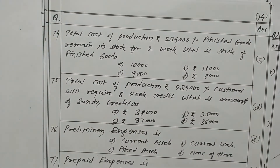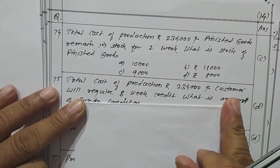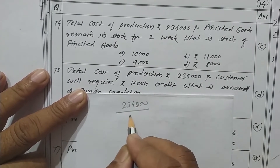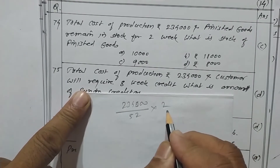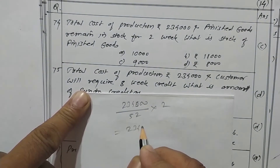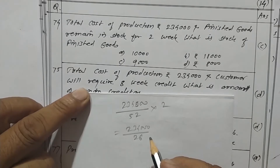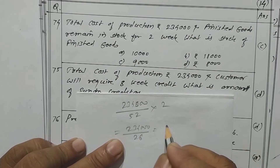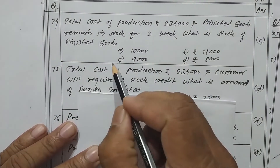Total cost of production is rupees 2,34,000. Finished stock remains in stock for 2 weeks. So 2,34,000 divided by 52 into 2 weeks gives stock of finished goods as rupees 9,000. Option C is the correct one.